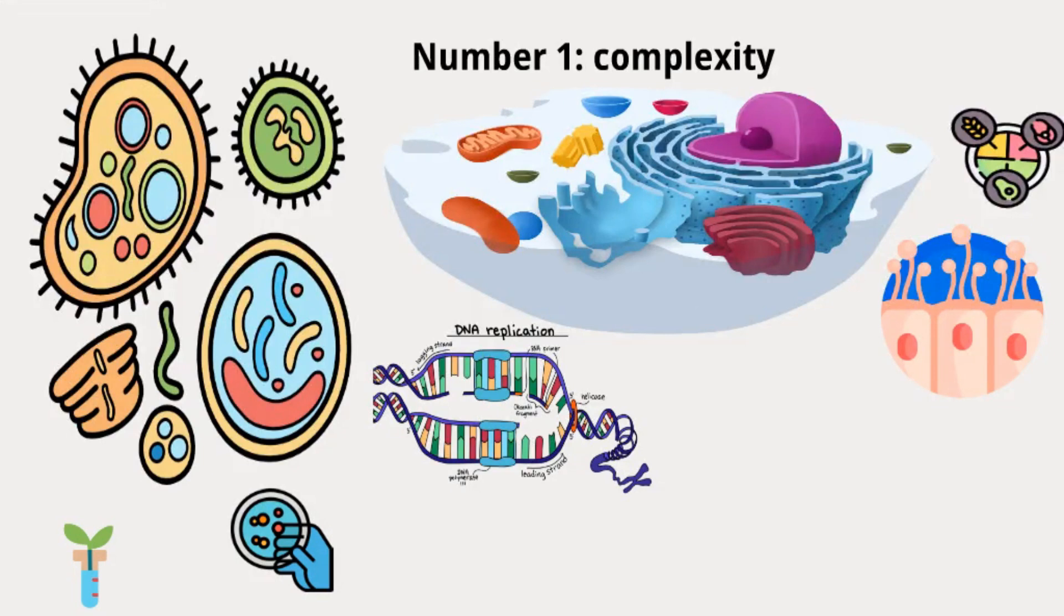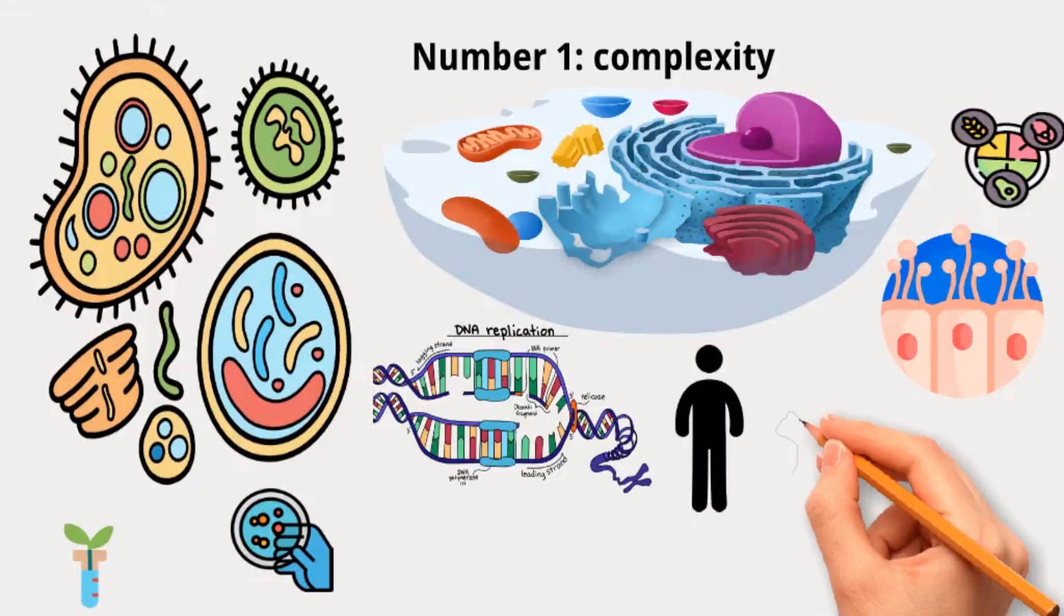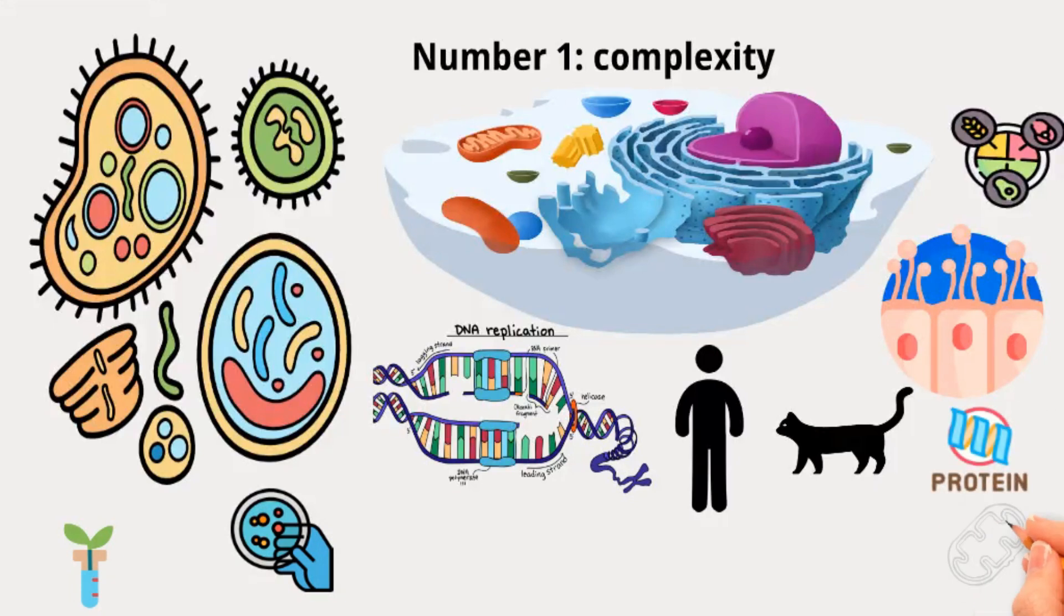The good news for scientists is that these levels of organization evolve slowly. Even though humans and cats look very different, our cells and organelles are quite similar. This means that what we learn about cells in one organism often applies to others. Basic life processes, like making proteins or using energy, are alike in all living things.